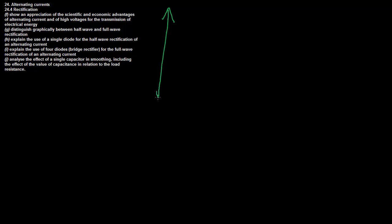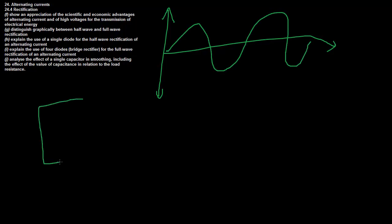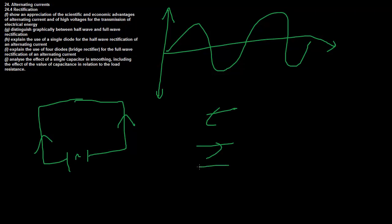So what is rectification? Well, as you know, AC currents produce a sinusoidal wave that looks like this. In a circuit with an AC power supply, the electrons first go one way, increasing their potential and then decreasing it, then they stop and go the other way, increasing and decreasing potential. The problem is a lot of electrical devices don't like it when electrons are flowing one way and suddenly start flowing the other way.